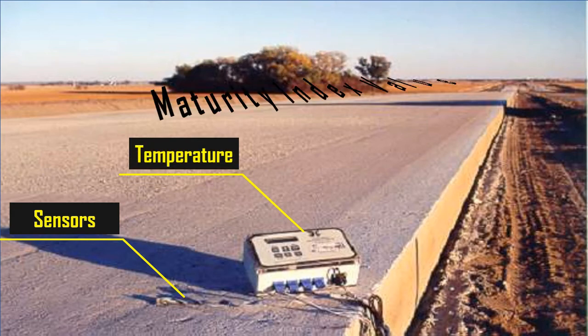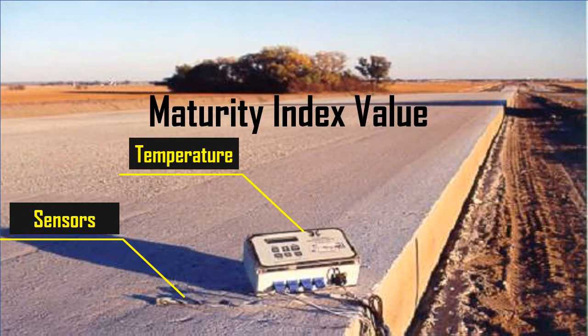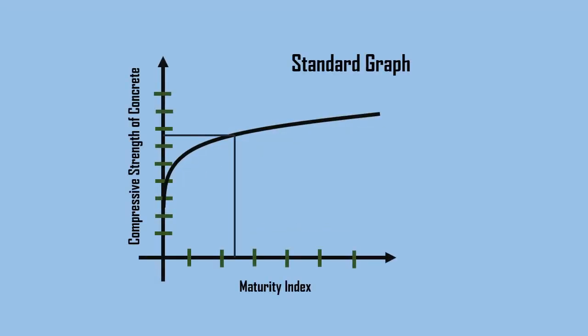The maturity index is calculated as we've seen earlier. Correlating the value of maturity index with the standard graph we formed earlier, we can determine the current strength of concrete.